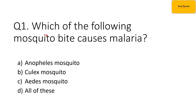The first question is: which of the following mosquito bites causes malaria? The options are option A, Anopheles mosquito; option B, Culex mosquito; option C, Aedes mosquito; or D, all of these. The correct option is option A. The bite of the female Anopheles mosquito causes malaria — not every mosquito bite, only the female Anopheles mosquito bite causes malaria.